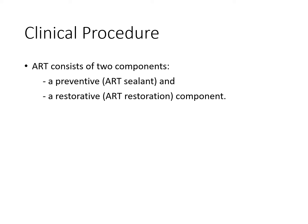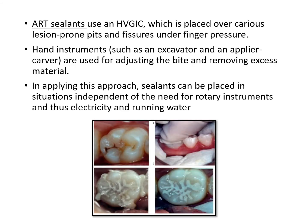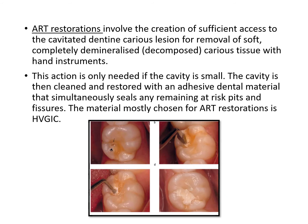For ART sealant: the area showing decalcified enamel is identified. Since we do not have a high-speed bur or handpiece, we mix GIC and place it on the tooth structure. Using a finger coated with Vaseline, we press very hard to push the GIC into the grooves, pits, and fissures. The excess material is then removed. This is the ART sealant using the finger pressure technique.